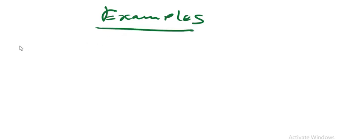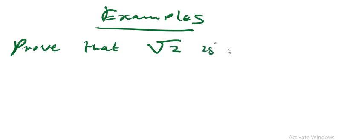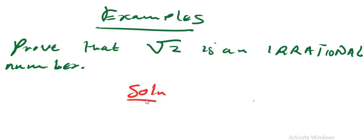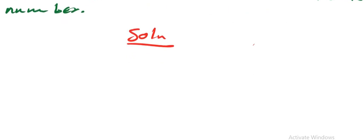Let me quickly give examples. The first example: prove that square root of 2 is an irrational number. So we are going to start with this question. The first thing I'm going to write is 'Solution.' Since we have been given square root of 2, we need to prove whether it is an irrational number.